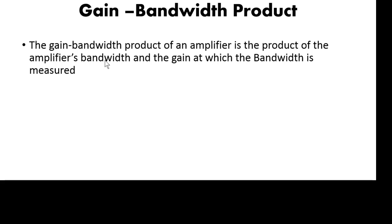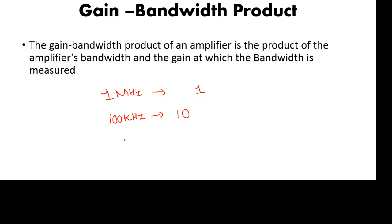For example, I have an operational amplifier and I want to measure its gain. When I measure its gain at 1 MHz, I find that the gain is unity — that is, the gain is 1. When I change the frequency and measure the gain at 100 kHz, I find that the gain is 10. If I further decrease the frequency to 1 Hz, the gain is 10 raised to the power of 6.